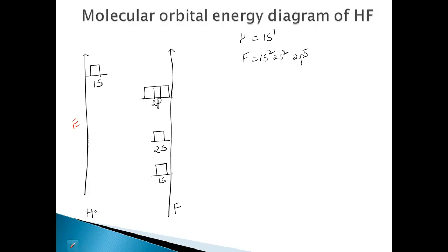During the formation of the molecule of hydrogen fluoride, fluorine has 1S2, 2S2, and 2P5, while hydrogen has only 1S1. The fluorine 1S orbital is an inner orbital, so it does not take part in bonding and remains as a non-bonding electron. So it remains at the same energy level, resulting in non-bonding electrons.